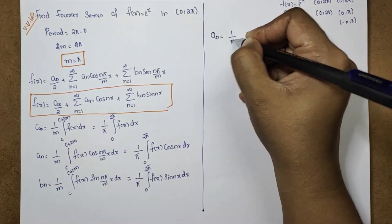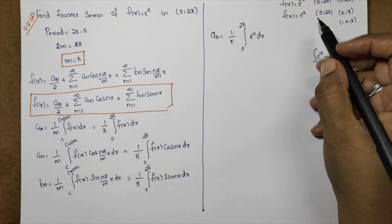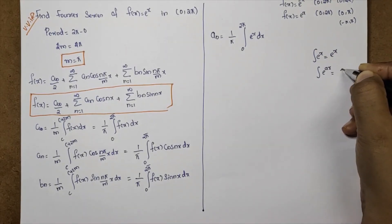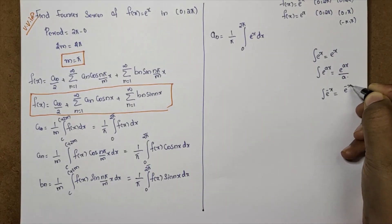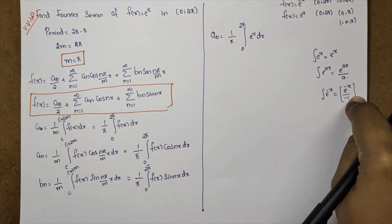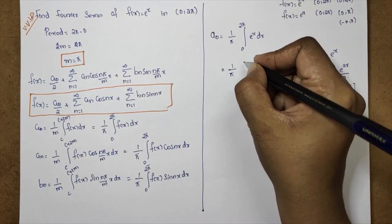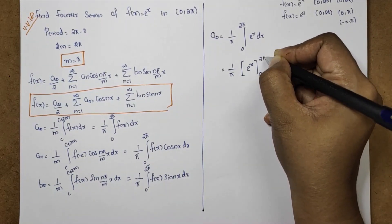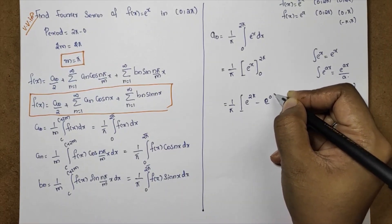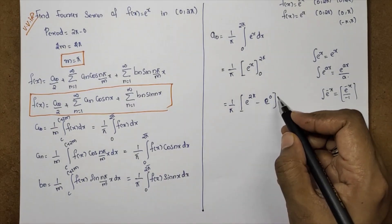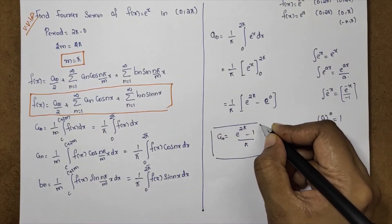We find a₀: a₀ is equal to 1 by π into integral from 0 to 2π of e raised to x dx. The integral of e raised to x is e raised to x. Applying the limits: 1 by π into [e raised to 2π minus e raised to 0]. Since e raised to 0 equals 1, we get a₀ equal to (e raised to 2π minus 1) by π.